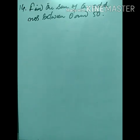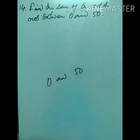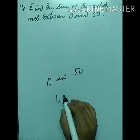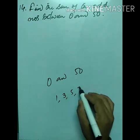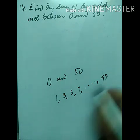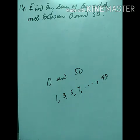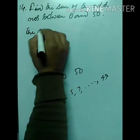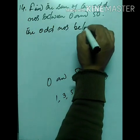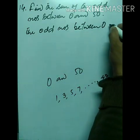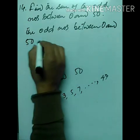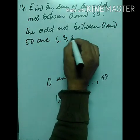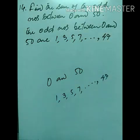Question 14: Find the sum of the odd numbers between 0 and 50. Between 0 and 50, the odd numbers start from 1, then 3, 5, 7, … and the last is 49. These odd numbers form an AP.